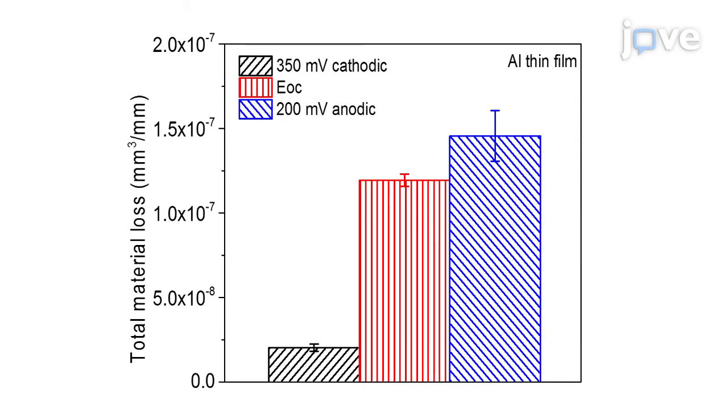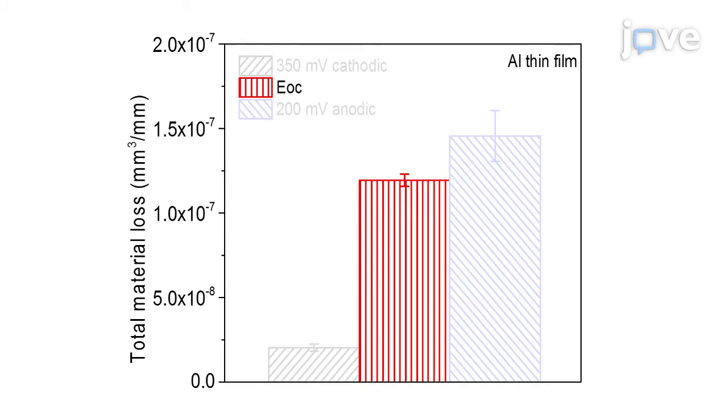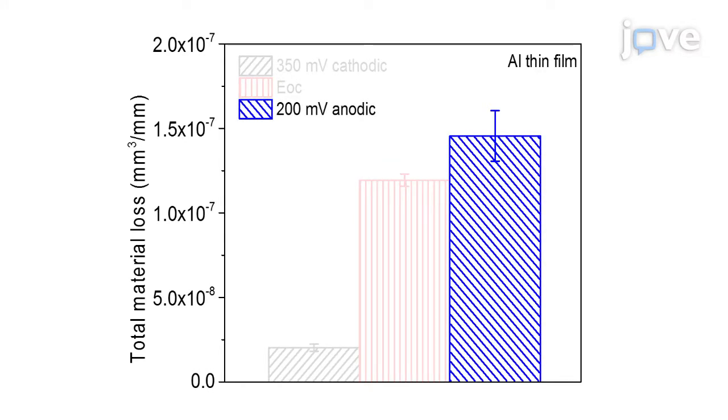Following the testing protocol as demonstrated, the tribo-corrosion rate and the material loss obtained for the aluminum thin film sample after tribo-corrosion can be measured at the cathodic, open circuit, and anodic potentials.